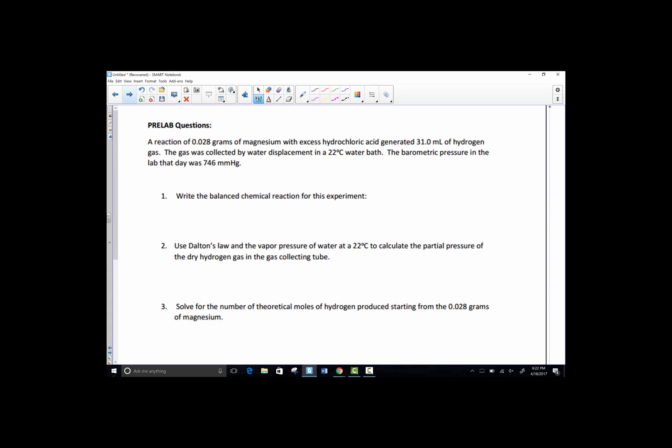So let's read through this pre-lab scenario. I have a reaction where 0.028 grams of magnesium react with excess hydrochloric acid, and it generates 31 milliliters of hydrogen gas. That gas was collected by water displacement. That's that gas collecting tube, the eudiometer that we described. And the thermometer in the water, it was reading 22 degrees Celsius. The barometric pressure of the day was reading 746 millimeters of mercury.